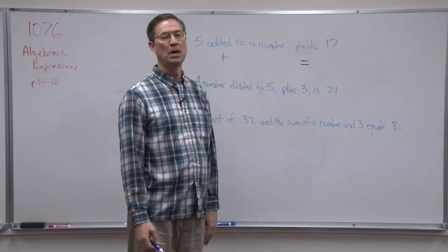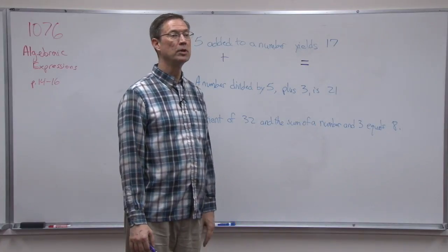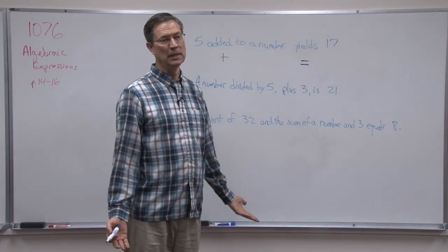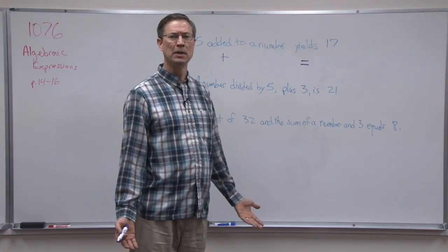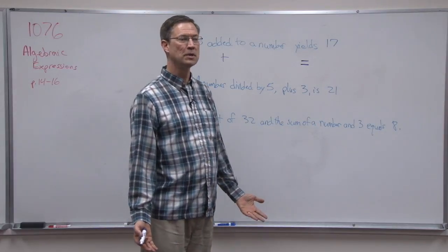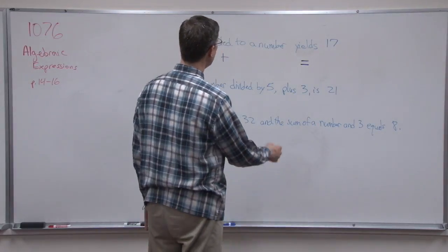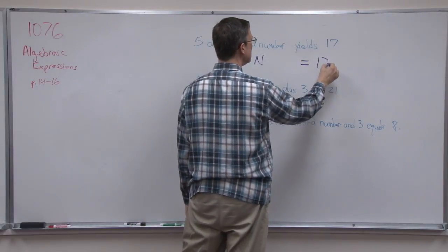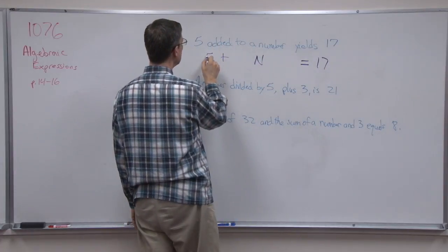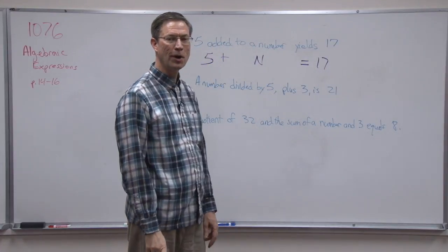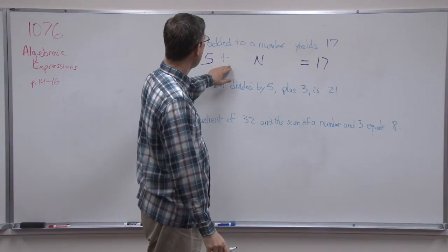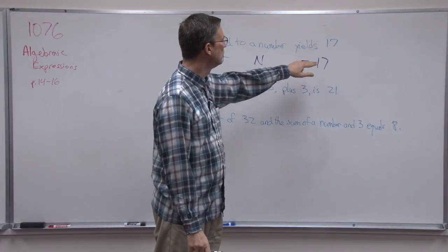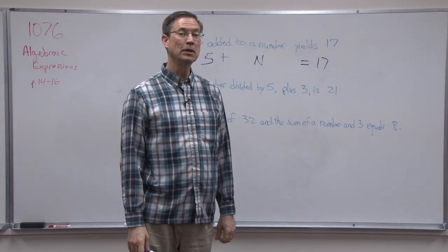We can use X, we could use A, we could use Y or Z. I happen to like N just because N kind of sticks with me as being a number. So I'm going to use N, but you can use X if you want. Yields 17, and then here at the beginning I can put 5.